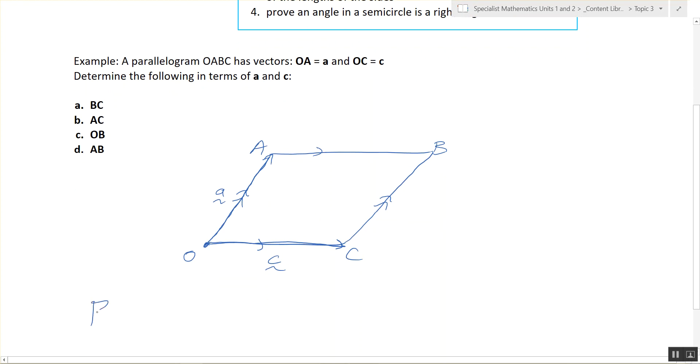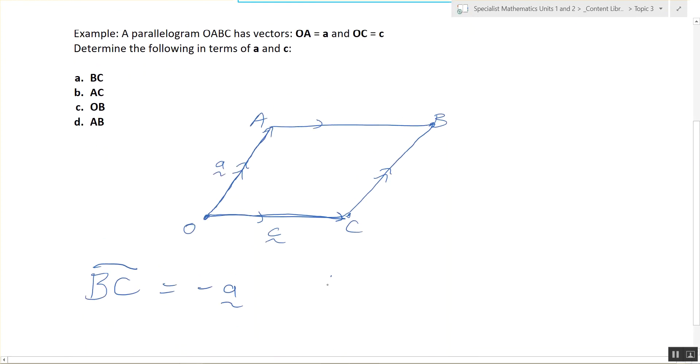Yep, very good. So BC is negative A. Is that okay? AC is from point A to point C. What's the answer to that one, Hayden? Vector what? So follow the vectors to get to that line. Negative A plus C. Oh, we're doing vectors. Or C minus A is also correct.